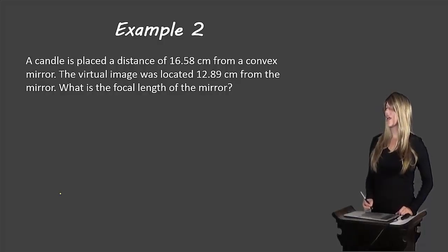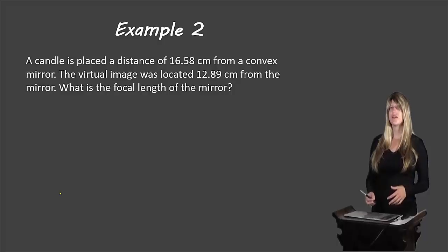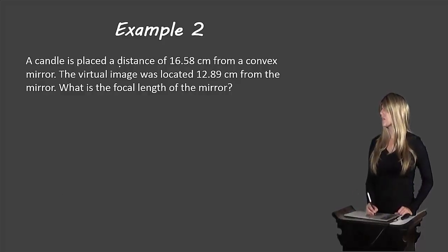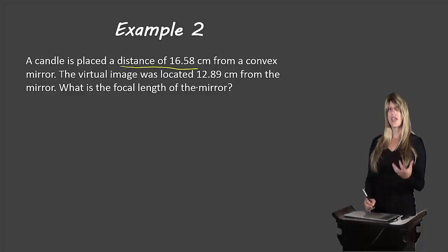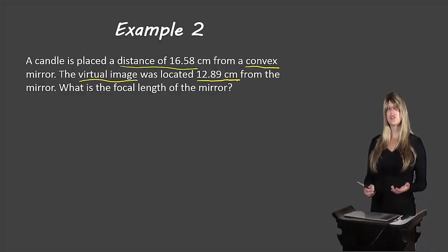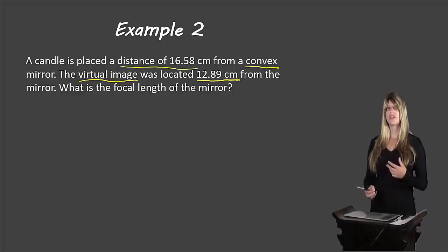Let's look at another example. A candle is placed 16.58 cm from a convex mirror. The virtual image was located 12.89 cm from the mirror. What is the focal length of the mirror? The candle distance represents DO = 16.58 cm. Since it's a virtual image, the image distance is DI = −12.89 cm (negative by convention for virtual images). We need to find the focal length F.